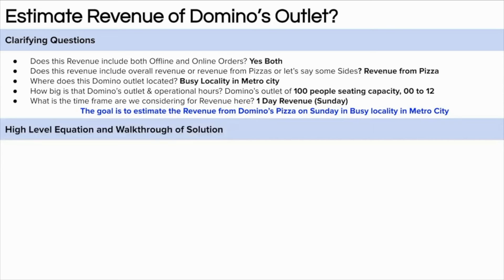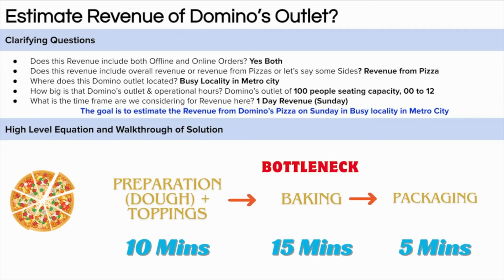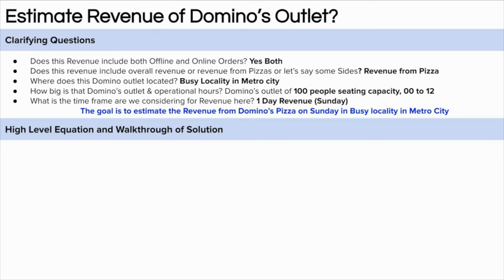Now the bottleneck concept: a pizza order involves taking the order, preparation, baking, and packaging. Domino's cannot bake infinite pizzas even with infinite staff — the bottleneck is the oven. You can parallelize dough preparation and toppings, but baking time is always required. So the constraint is the number of ovens, not staff. Even with seemingly infinite demand in a metro city, production is bounded by oven capacity. The high-level approach: split 12 hours into peak and non-peak, apply oven utilization rates, calculate pizzas baked, then apply average order value.